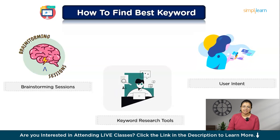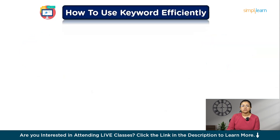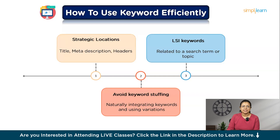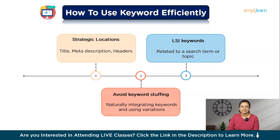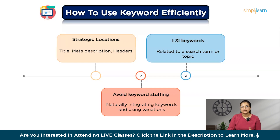Finding the right keywords is only half the battle — the next challenge is using them effectively in your content. First, place your primary keywords in strategic locations such as the title, meta description, headers, and throughout the content. This signals to search engines what your content is about, helping you rank for that keyword. Second, avoid keyword stuffing — this old-school tactic doesn't work anymore and can actually hurt your rankings. Instead, focus on naturally integrating keywords and using variations. For example, if your primary keyword is 'digital marketing strategy,' you could also use 'online marketing strategy' or 'effective digital marketing tactics' to make your content more readable and engaging. Third, use LSI keywords to add depth and context, which improves readability and helps search engines understand the broader topic — positively impacting your rankings. Remember, the goal is to create content that's both optimized for search engines and enjoyable for your readers.